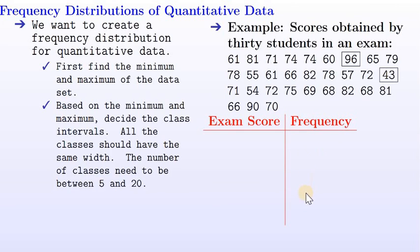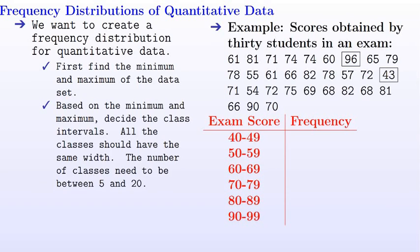Looking at this data, we can make class intervals of 40 to 49, 50 to 59, 60 to 69, 70 to 79, 80 to 89, and 90 to 99. These are the class intervals.